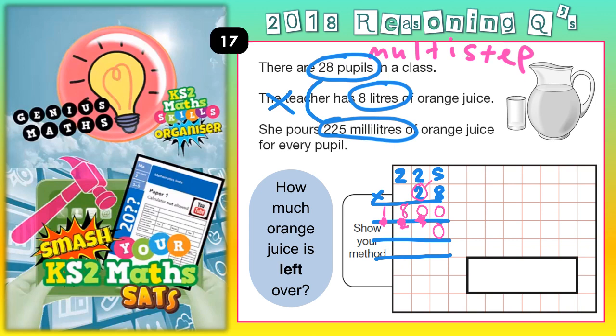Now we go 2 fives, 2 twos, 2 twos. 2 fives are 10, put the 0 in and carry the 1. 2 twos are 4, plus the 1 is 5. And 2 twos are 4 again. So that's 4,500.